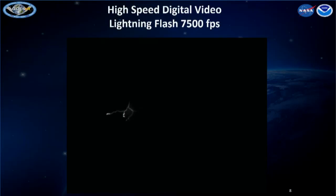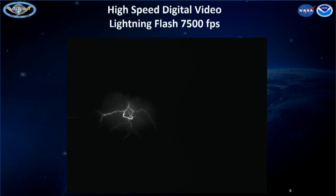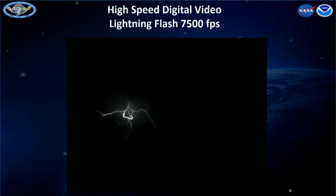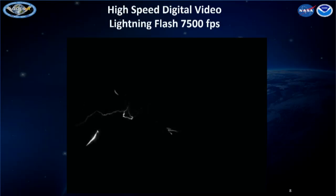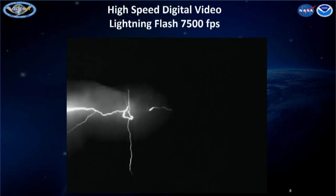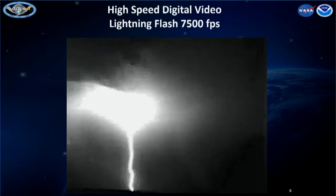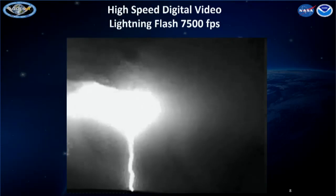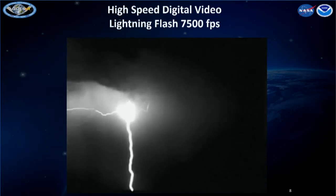Here's a lightning flash from a digital video camera at 7,500 frames per second. You can see the lightning tapping space charge and working its way down to the ground. These small channel pieces are tapping space charge but not making connection to the ground — we won't see that from space; that light is too weak to get through the cloud. But when it does make connection with the ground, the return stroke brings current up into the cloud and the light makes its way to cloud top.